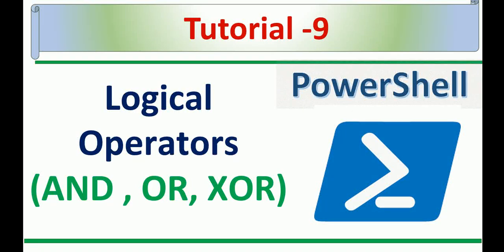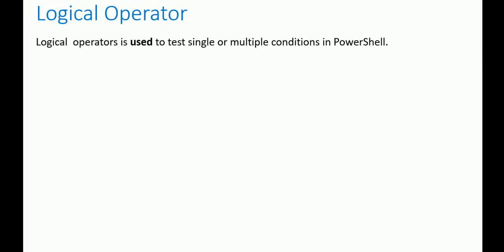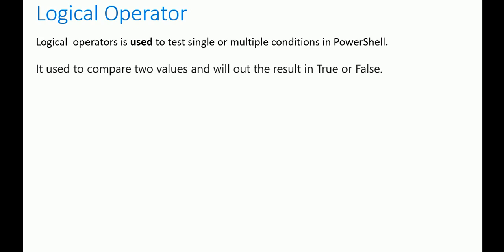Hi guys, welcome back to my YouTube channel. Today we are going to learn how to use logical operators in PowerShell. Inside the logical operator, we are going to use the AND, OR, and XOR operators. A logical operator is used to test single or multiple conditions in PowerShell. It is used to compare two values and will output a result of true or false. When using a logical operator, the value will always be true or false.